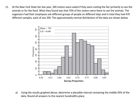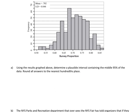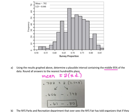Number eleven, part A: find the middle 95% — the 95% confidence interval — using mean plus or minus 2 standard deviations. The given mean is 0.702 and standard deviation is 0.048. So 0.702 − 2(0.048) = 0.606, and 0.702 + 2(0.048) = 0.798. Rounded to the nearest hundredth, the lower bound is 0.61 and the upper bound is 0.80. This is our 95% confidence interval.